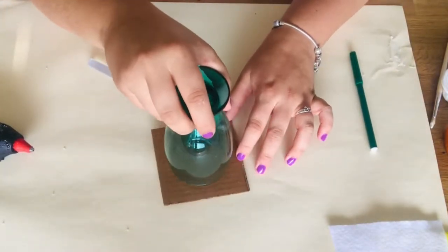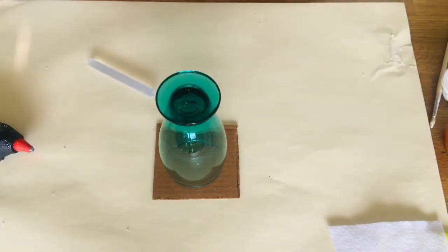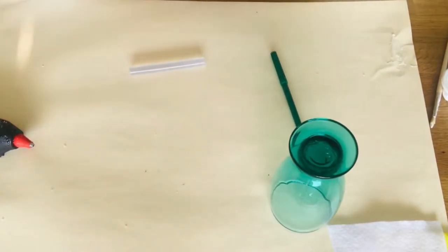So first, take your round object and place it on top of your cardboard. Then take your marker and trace it around. And then cut out your cardboard.